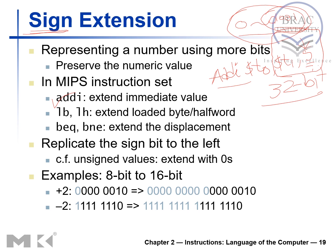There are a few other instructions: LB, which is load byte, and LH, which is load half word. Load byte loads the LSB 8 bits of a value. Load half word — since our word size is 32 bits — loads the first 16 bits. There are also branch instructions: branch equal (BEQ) and branch not equal (BNE).